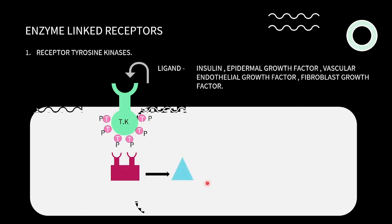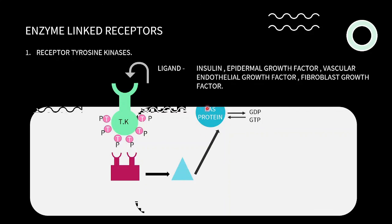The activated protein then activates another protein called SOS — son of sevenless protein. SOS in turn activates RAS protein, a monomeric G protein. Unlike trimeric G proteins, RAS has only one binding site with GDP attached. When RAS gets activated, it exchanges GDP for GTP, becoming overstimulated. The activated RAS then activates RAS kinase, which activates MAP kinase — mitogen-activated protein kinase.